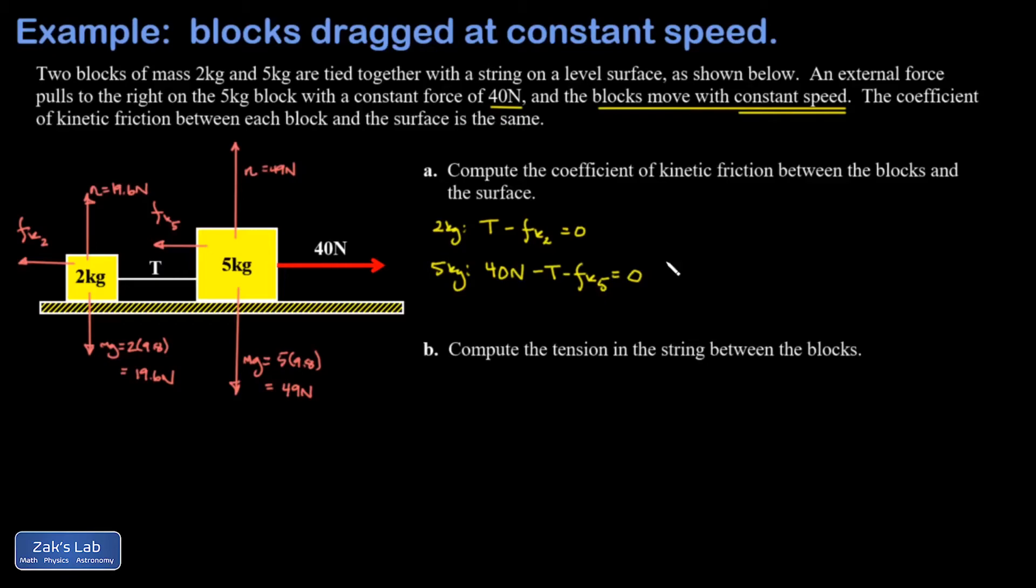Now I can plug in the fact that each friction force is given by the kinetic friction coefficient multiplied by the normal force. The normal force for the 2 kilogram block was 19.6 newtons. I do the same thing for the 5 kilogram block: I have 40 minus T minus mu_k times the normal force on that one, which was 49, is equal to zero. Now I can get at that kinetic friction coefficient by adding these two equations. When I do that, the T's are going to eliminate.